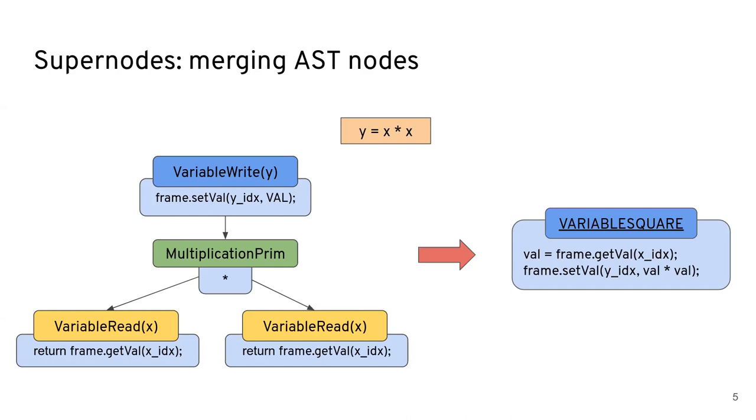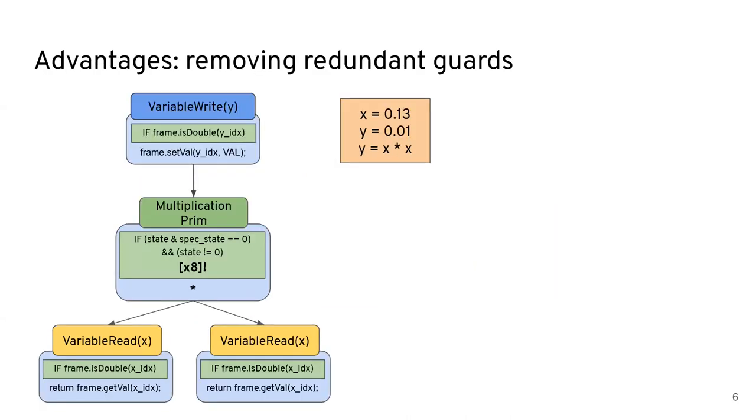But we save a lot of performance, most notably on removing redundant guards. Because in this context, AST interpreters have to do behavioral checks to see if the input matches a certain criteria. So for example, in this case, if you consider that x and y are both double types,